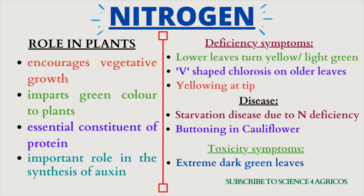The disorder due to nitrogen deficiency is starvation disease. Another important one is buttoning in cauliflower. The toxicity symptom is that extreme dark green colour leaves are noticed on the plant.